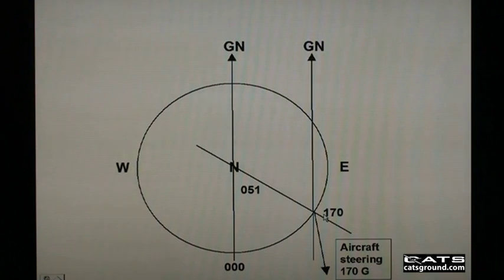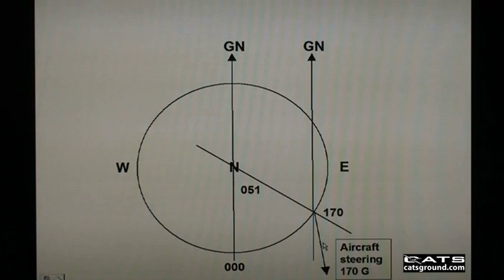The aircraft was steering 170 degrees grid. This is measured round from the grid north reference, which is at the top of the page, right round to here. For example, 180 degrees grid would have been here.